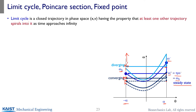The limit cycle is a closed trajectory in phase space — like theta versus omega, or x versus velocity — having the property that at least one other trajectory spirals into it. For example, the light blue trajectory doesn't spiral into the steady-state cycle. However, the dark navy trajectory, as time goes by, will actually converge to this steady-state trajectory. So this is a limit cycle.